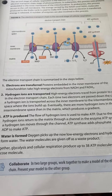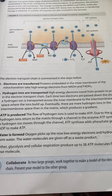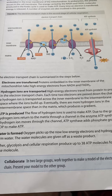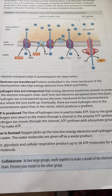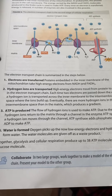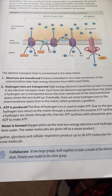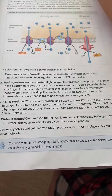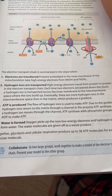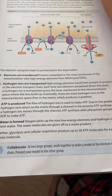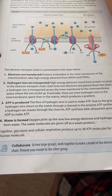Electrons are transferred. Proteins embedded in the inner membrane of the mitochondria take high-energy electrons from NADH and FADH2. Hydrogen ions are transferred, traveling from protein to protein in the chain. Each time electrons are passed down, hydrogen ions transfer from the inner membrane to the intermembrane space, and ions build up.